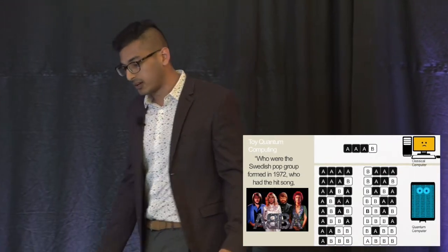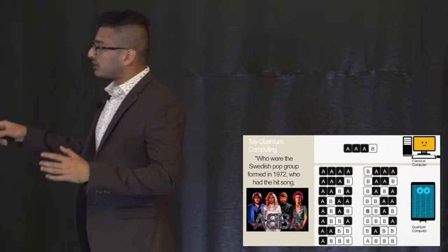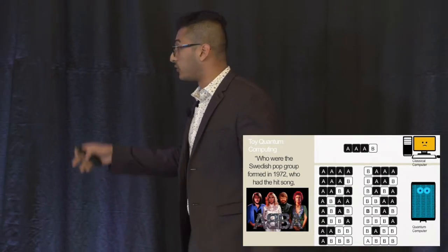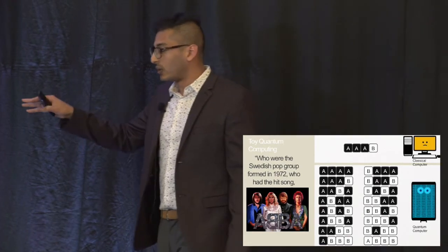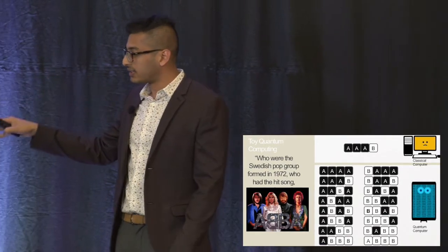Now, the quantum computer is in all the possible states of this at once. So if you have four bits, you'll have 16 different combinations. And in a weird way, it'll be in all of these states at once.